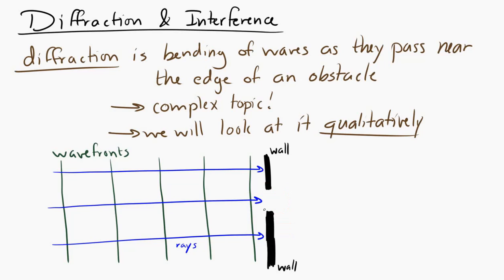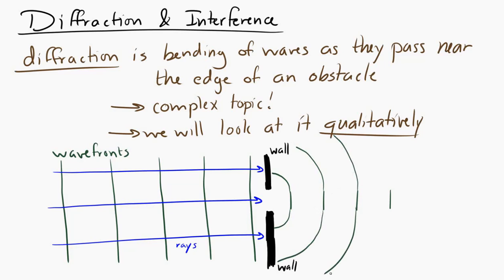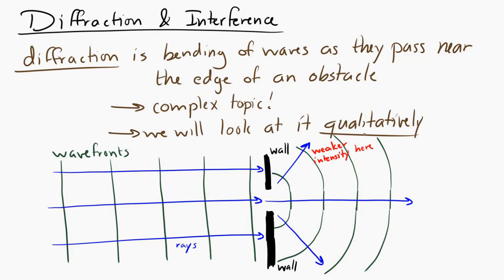The waves that just go through the middle of the gap are going to pass straight through, pretty unaffected. But the waves that pass near the edge of the obstacle will bend. They bend sort of around the obstacle. And where they've been diffracted greatly, the intensity is going to be relatively low.